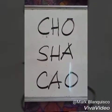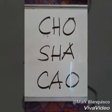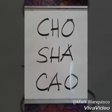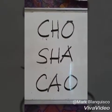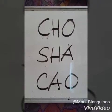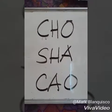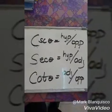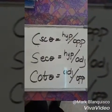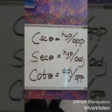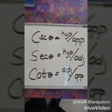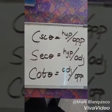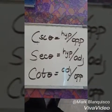In order to memorize it easily, we will just be using the mnemonics CHO, SHA, KAU. CHO stands for cosecant, SHA stands for secant, and KAU stands for cotangent. Cosecant theta is equal to hypotenuse over opposite, secant theta is equal to hypotenuse over adjacent, and cotangent theta is equal to adjacent over opposite.